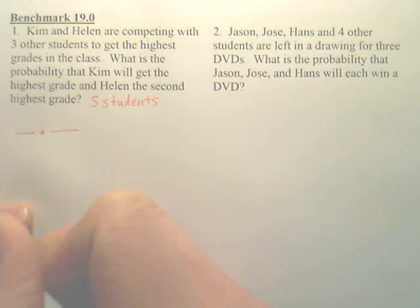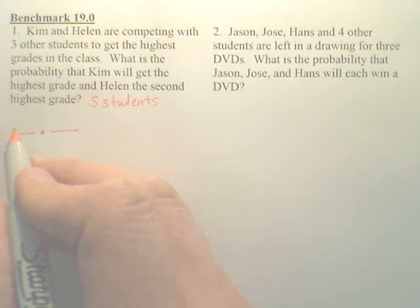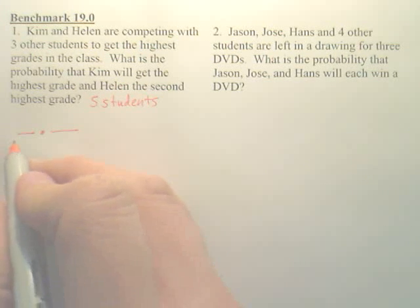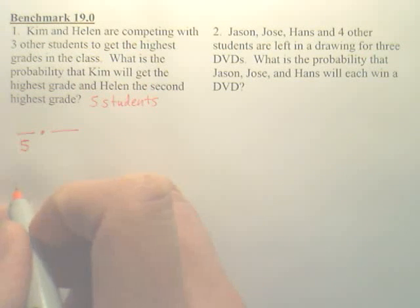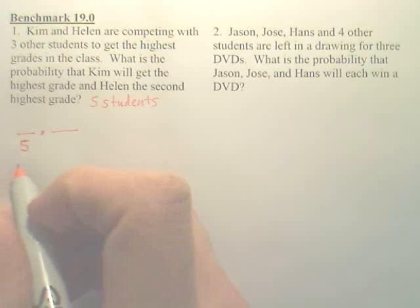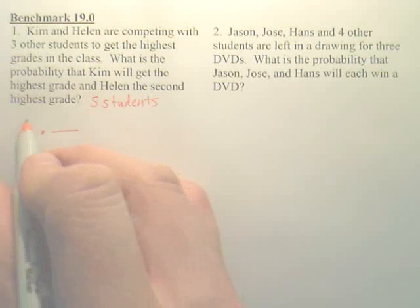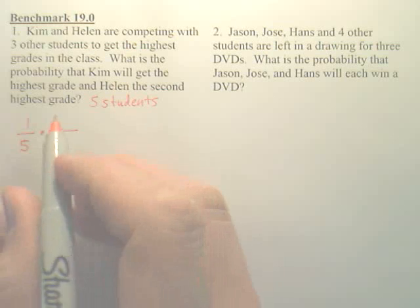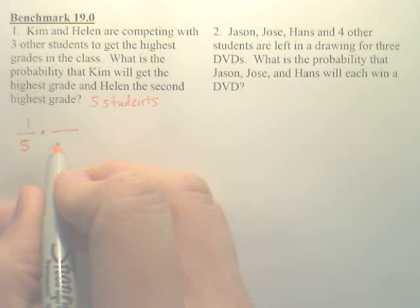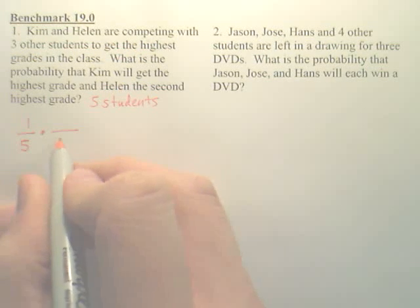So for Kim to get the highest grade, how many choices do we have for the highest grade? We have five people. And when I say Kim is getting it, there's only one Kim, so that's one. Now, for the second place, do we still have five available? No, because it's second place — first is taken. So isn't this four?